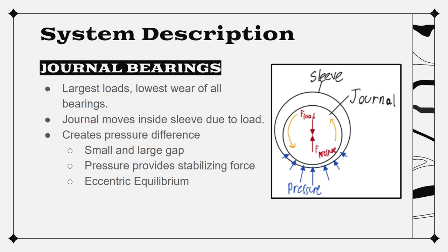In terms of some basics on journal bearings, they are able to handle the largest loads while seeing the lowest wear of all bearing types. How they're able to do this is actually with a very simple design. As you can see by the picture on the right, it is simply a shaft spinning inside of a sleeve separated by a very thin coating of some kind of fluid.